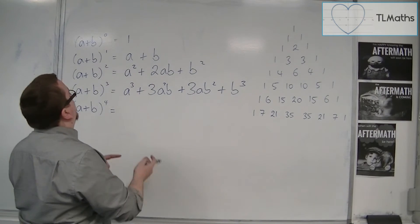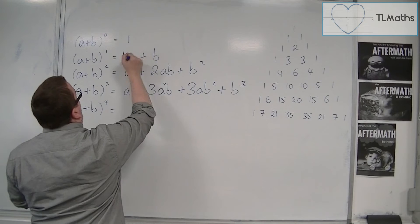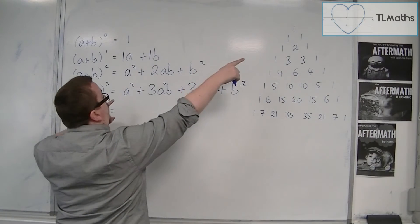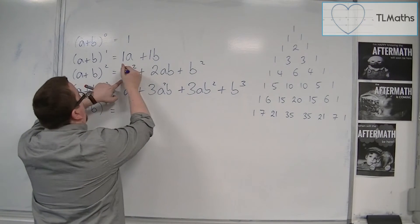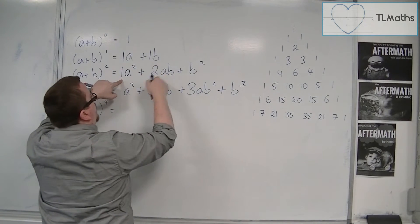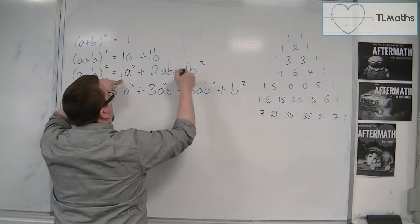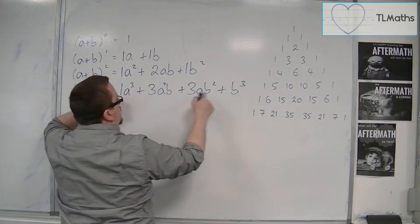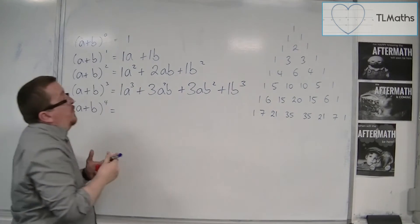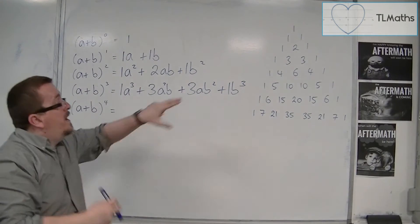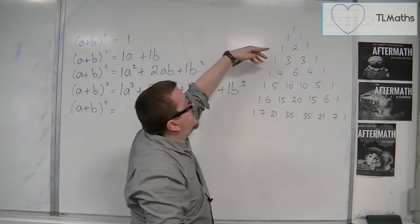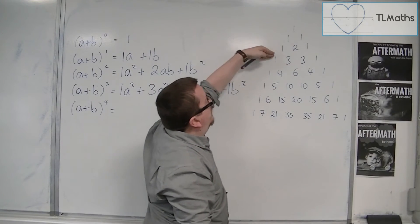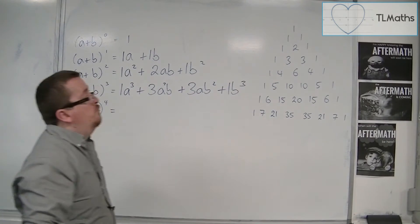Now we want to identify how this relates to Pascal's triangle. We have 1; then 1a plus 1b, so 1, 1; then 1, 2, 1; then 1, 3, 3, 1. So the coefficients directly correspond to those first four rows of Pascal's triangle.